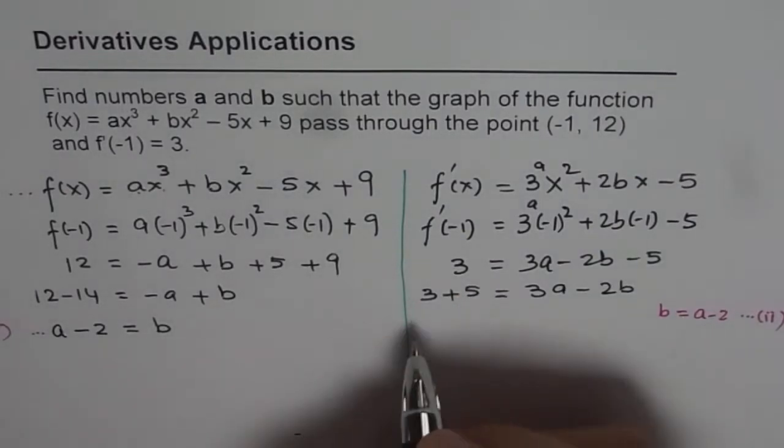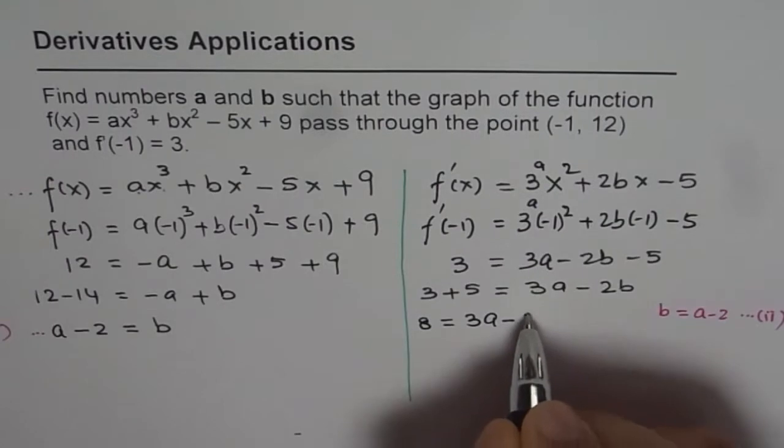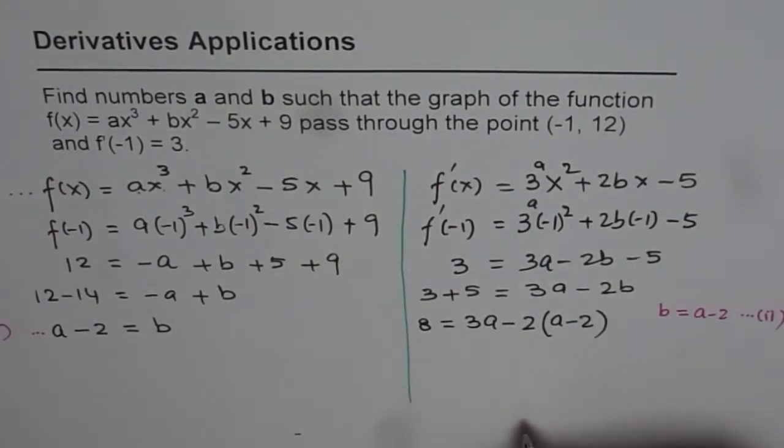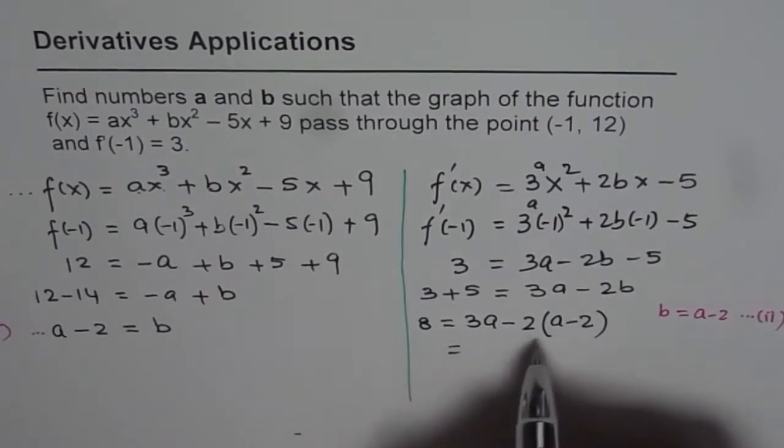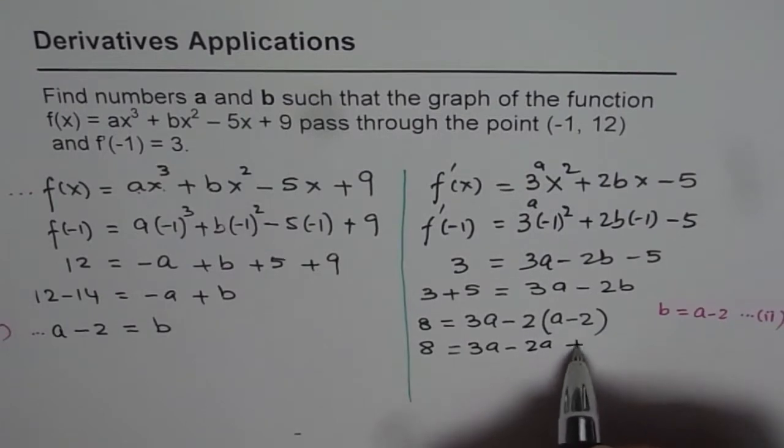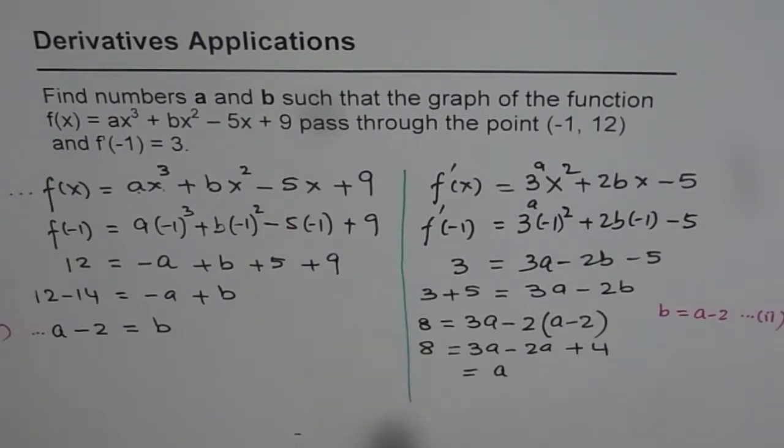So we get here, 3 plus 5 is 8, equals 3a minus 2 times (a - 2). Now, let's open this bracket and solve. So we get 3a - 2a + 4. 3a - 2a is a, and 8 - 4 is 4. So we get the value of a as 4.